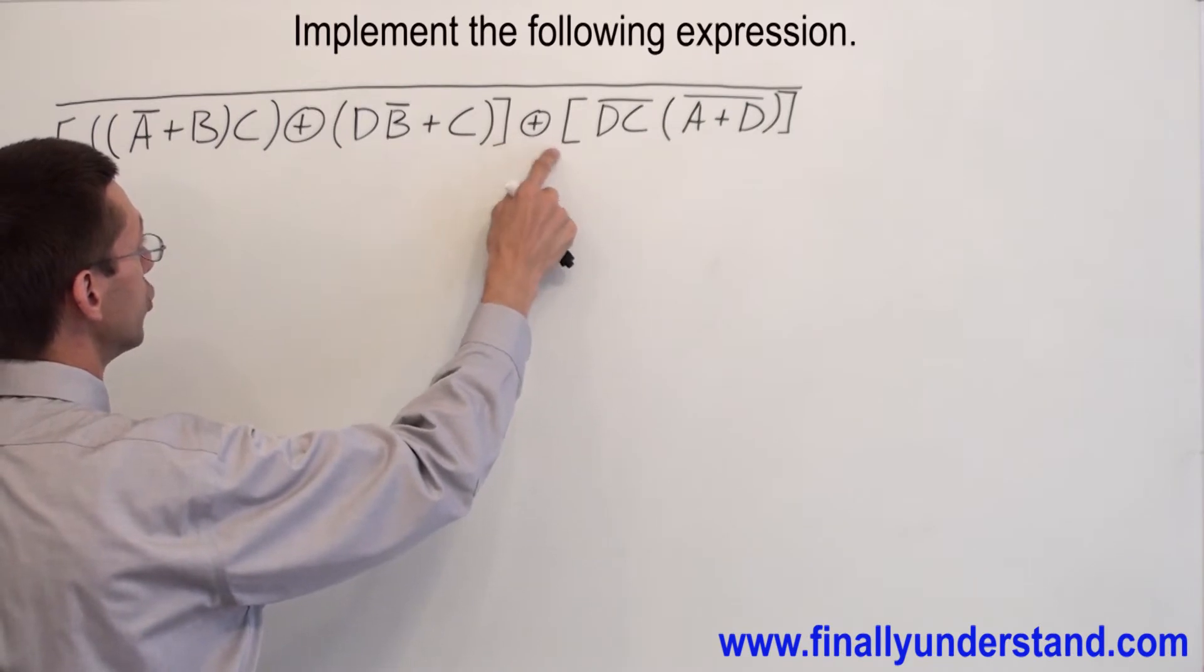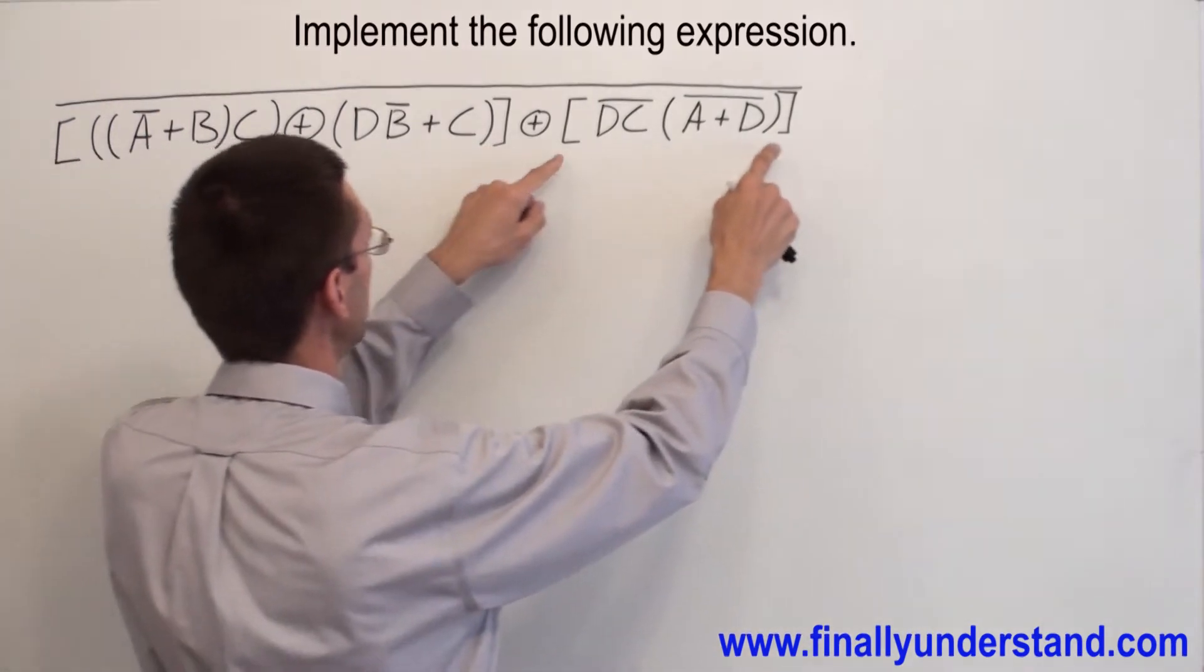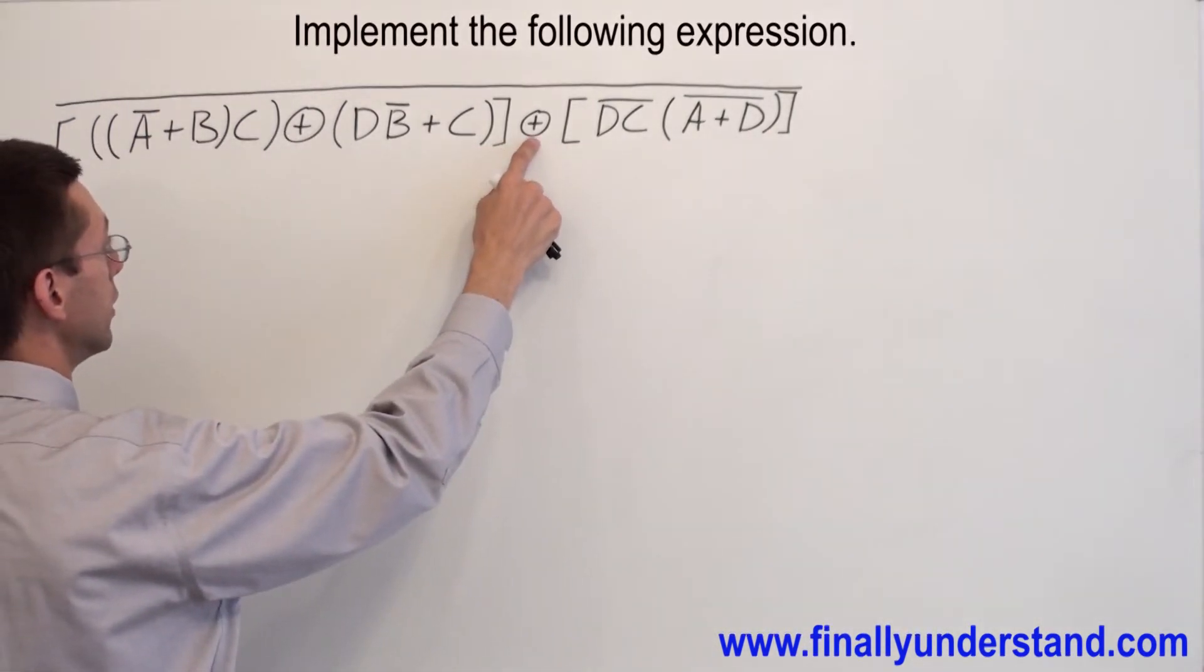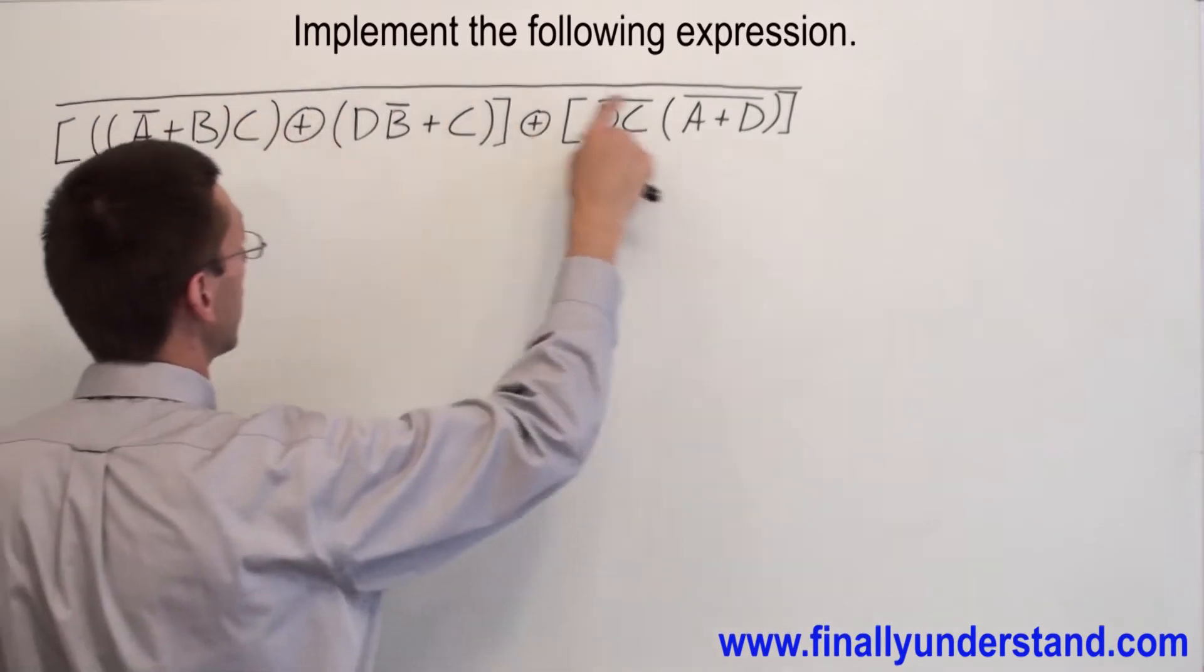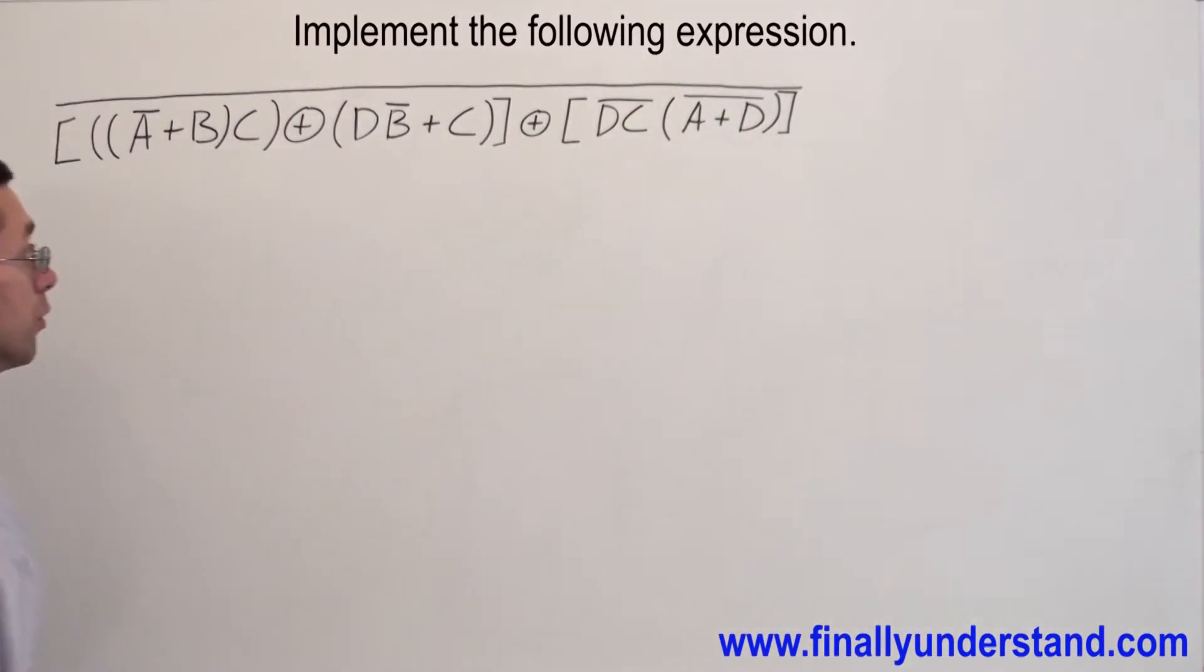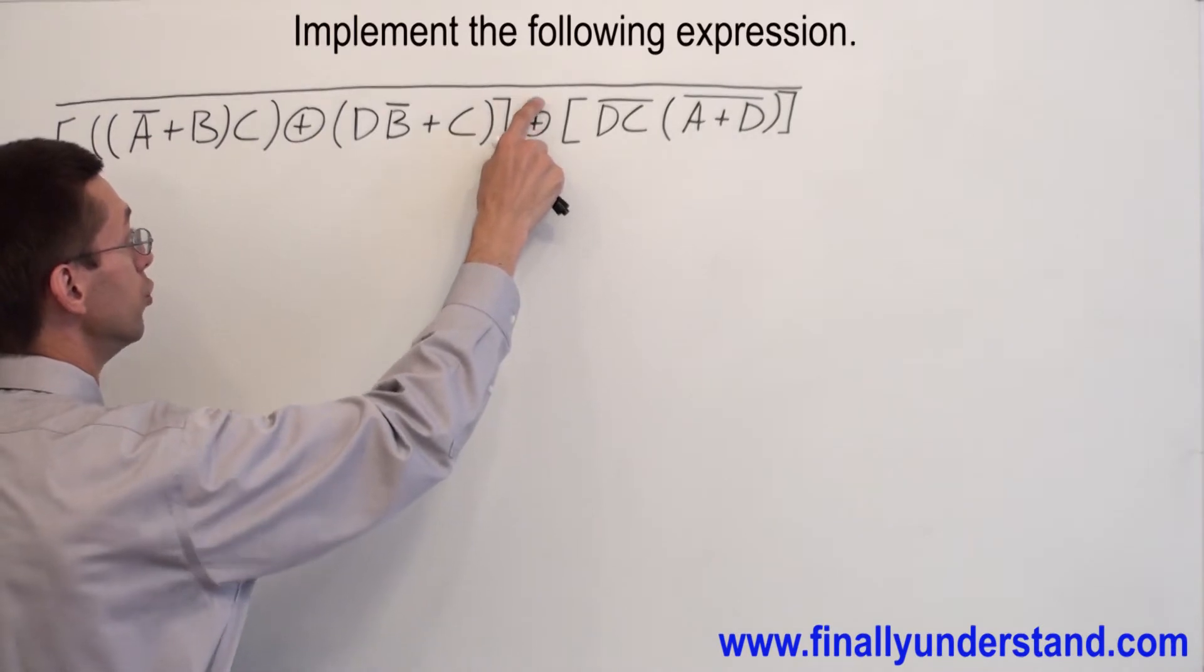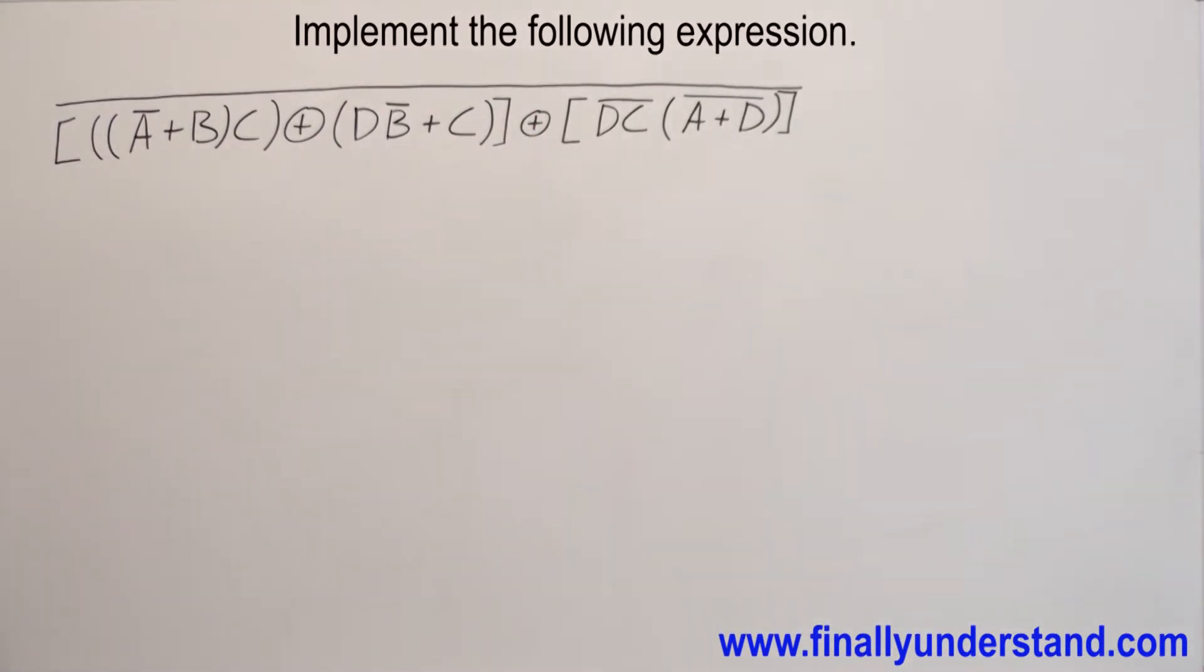Between these two brackets, because I have two pairs of brackets, these two and these two, they are connected together by exclusive OR. But if you look above, I have a long bar over the whole expression, which is making this exclusive OR into exclusive NOR. So exclusive NOR is the very last gate which I am going to use in my circuit.